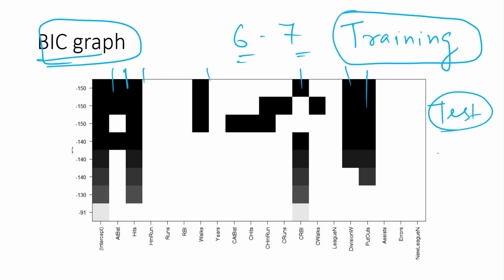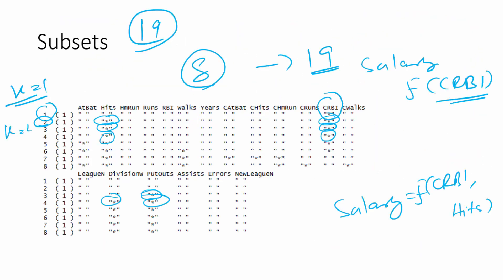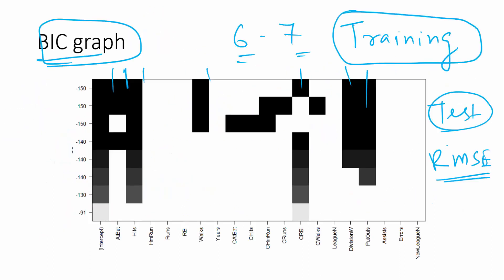What you need to do is calculate the RMSE — the root mean square error — for the test dataset for each model. So for each of the eight models, calculate the RMSE on the test data and choose the one that gives the least RMSE. The idea is to find the minimum RMSE.